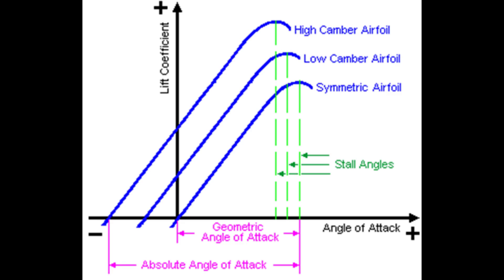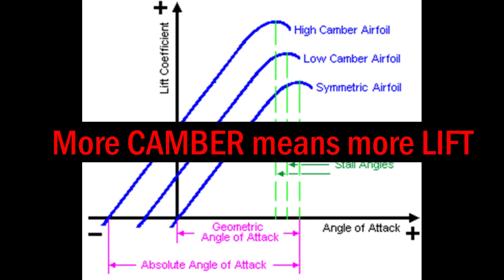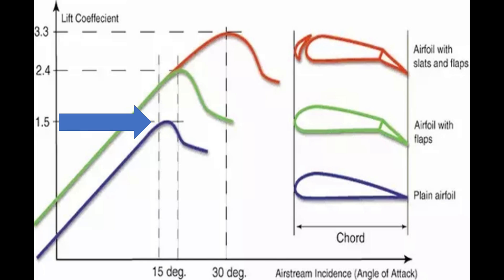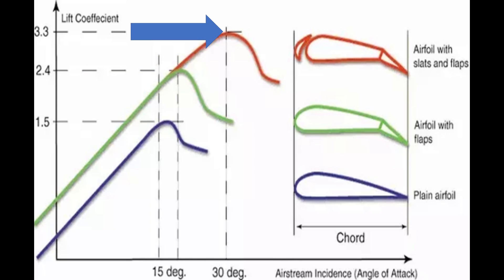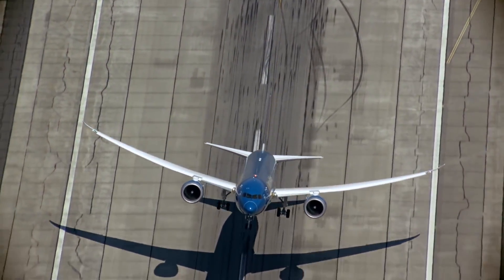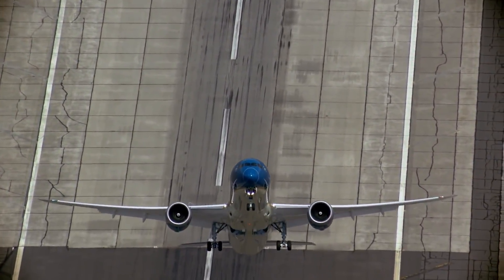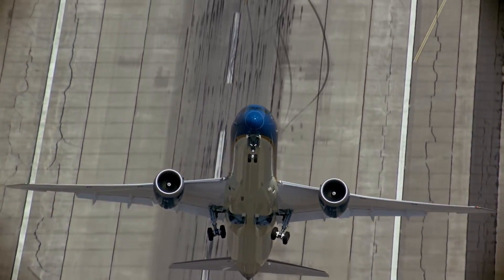As NASA so eloquently put it: double the area, double the lift. The second very important thing these control surfaces do is increase the camber of the airfoil — and the key takeaway here is that higher camber equals more lift. Third, these control surfaces also enhance the stall angle. As we can see in these graphs, extending the flaps increases the stall angle a little, and using flaps and slats together increases it even further. This allows the aircraft to pitch up to a higher angle of attack, generating even more lift.